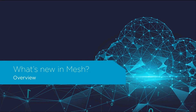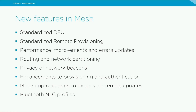Thank you, Pavel. Let's start with an overview of new features recently released in the Mesh specifications. First, standardized device firmware update — the Mesh DFU and BLOB transfer models bring a seamless standardized approach to upgrading devices. Next, a major enhancement: standardized remote provisioning. The updated Mesh protocol specification also encompasses crucial errata fixes, performance enhancements, routing capabilities, and network parsing features. Improving security, the spec adds privacy for network beacons and enhancements to the provisioning protocol. Errata fixes in the Mesh model specification and minor improvements such as addition of optional metadata also help end products.